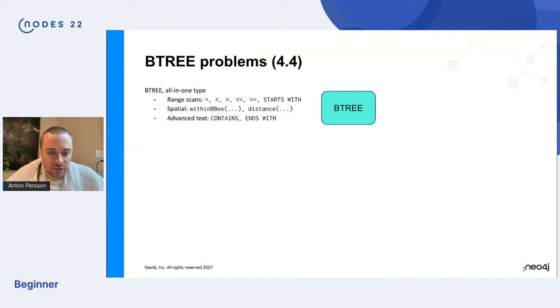So the Btree index type is kind of, or was kind of, it's removed now in five, but in 4.4 it was a kind of all-in-one type. It has support for range scans like greater than, less than, equality, starts with. But it also has some spatial functionality and you can answer distance and within bounding box type queries. And also some advanced text functionality that contains and ends with. And this seems great, of course.